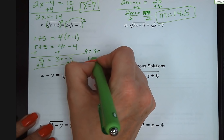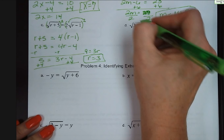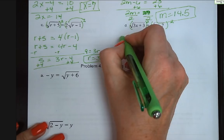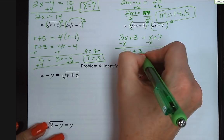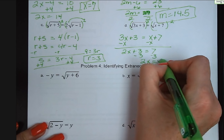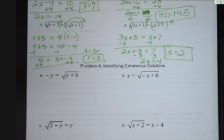Letter d: square root of 3x plus 3 squared equals square root of x plus 7 squared — drop the radicals. Subtract x from both sides: 2x plus 3 equals 7. Subtract 3: 2x equals 4, so x equals 2. Now here comes a place where people tend to have trouble: identifying extraneous solutions.